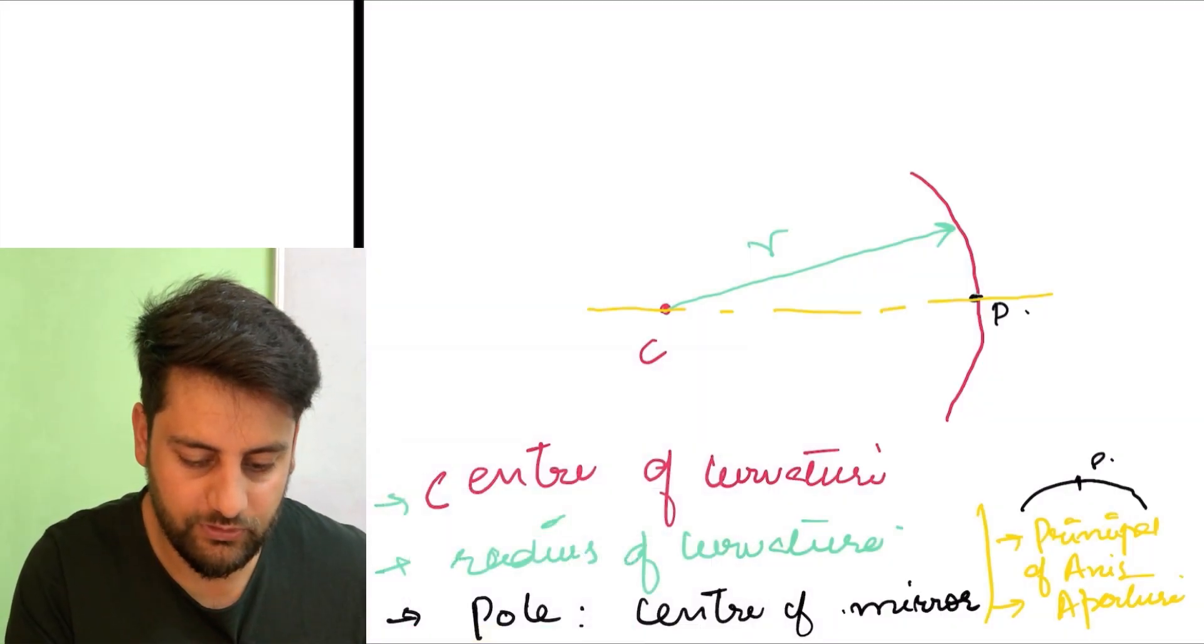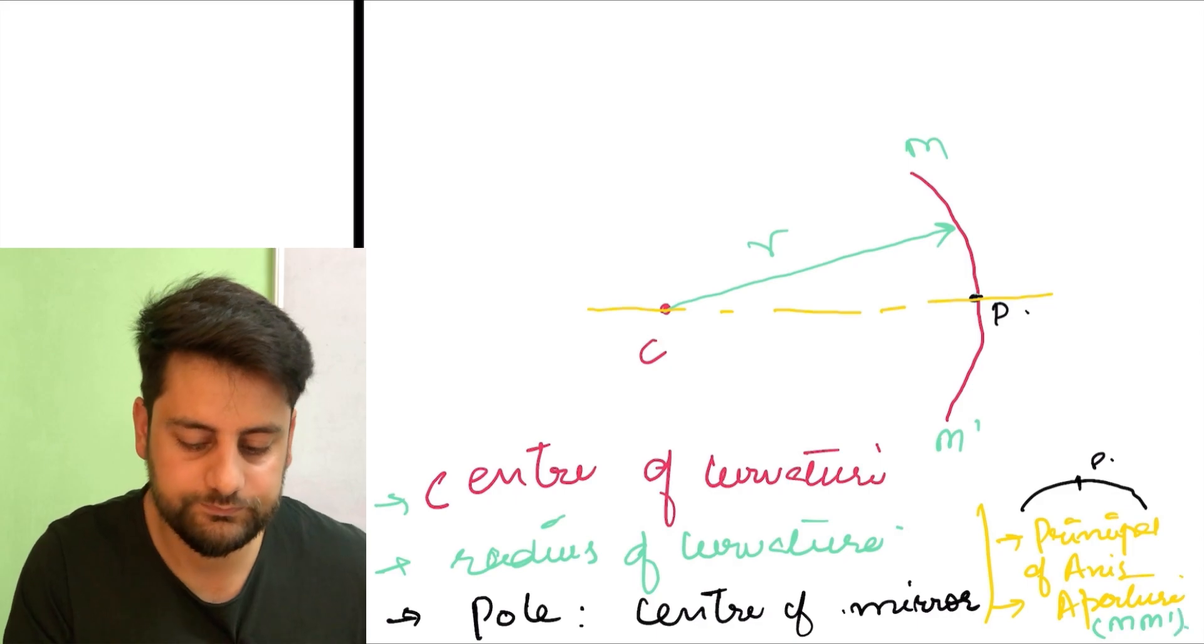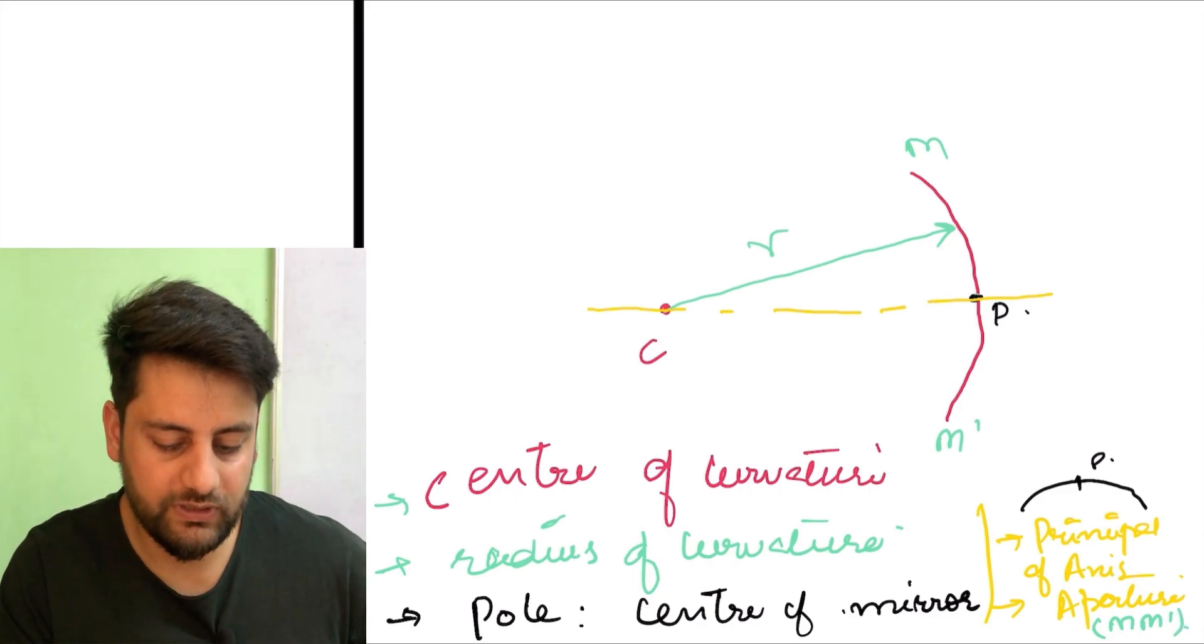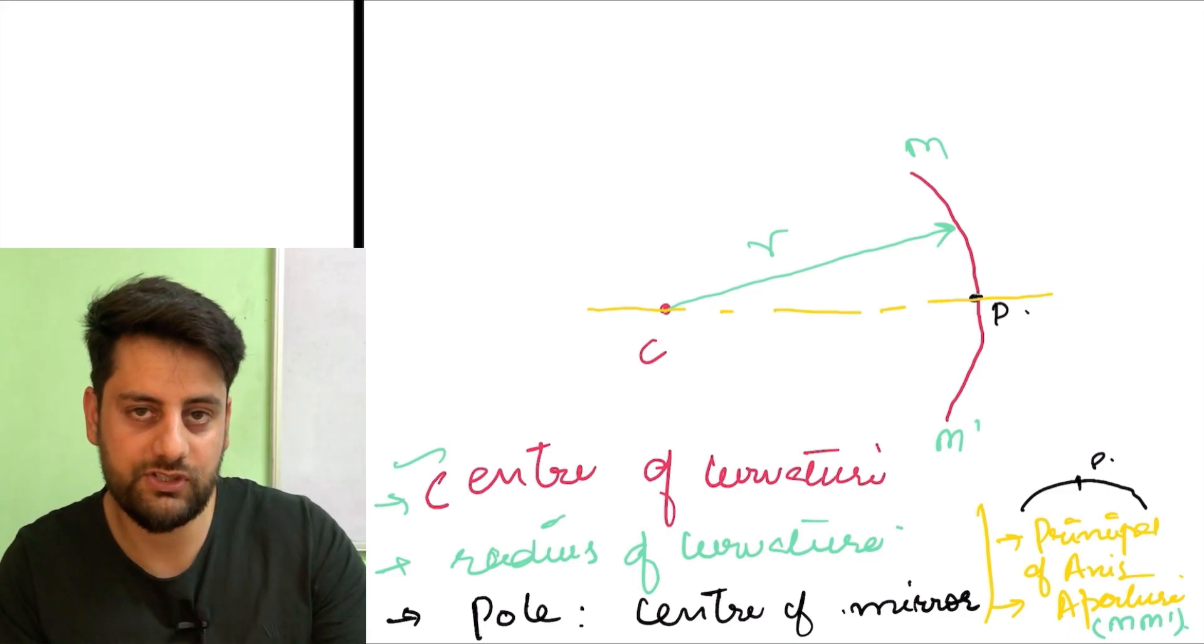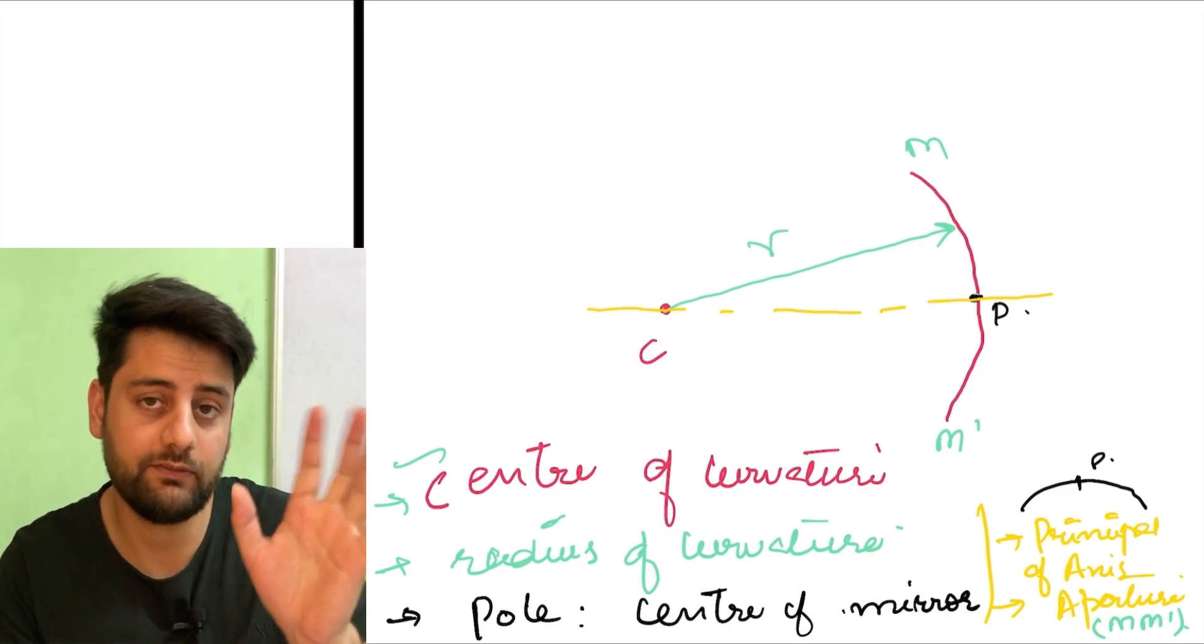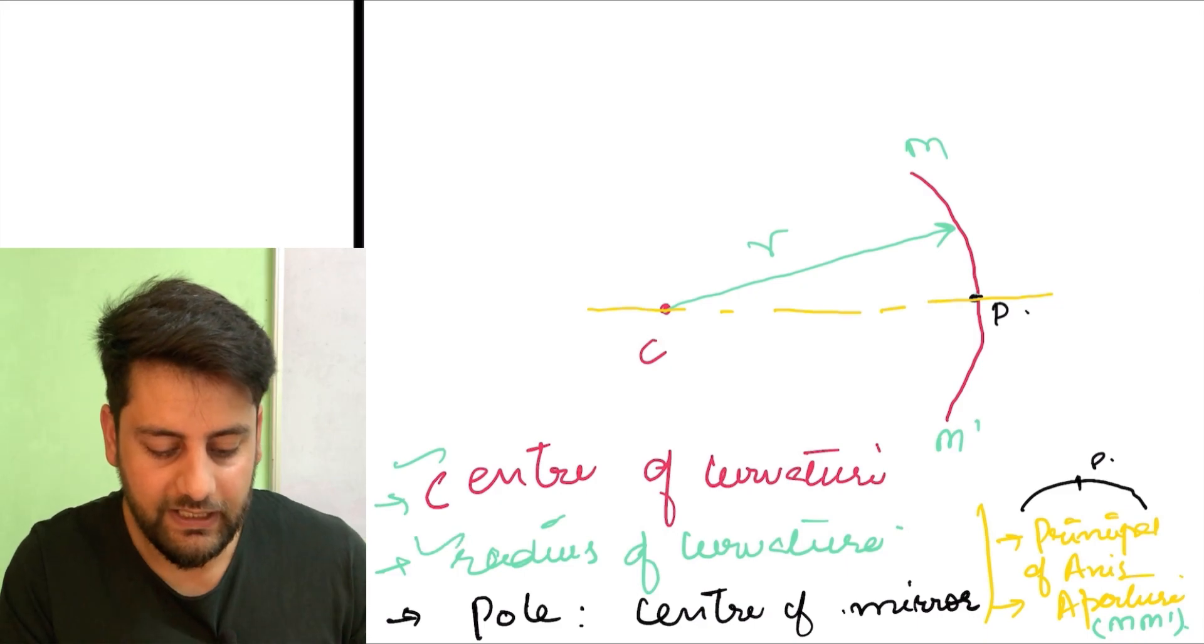So if I look here, suppose meri yaha pe joh length hai, that is M, M dash, to aperture basically yaha pe MM dash hai. So these are few terms. Center of curvature, joh basically is curvature ka, joh sphere ka center tha, wahi is curvature ka bhi center hoga. Radius of curvature.